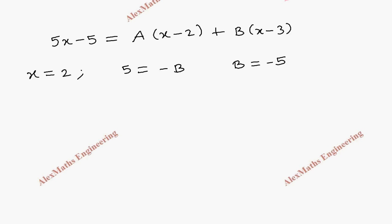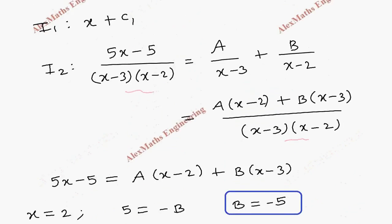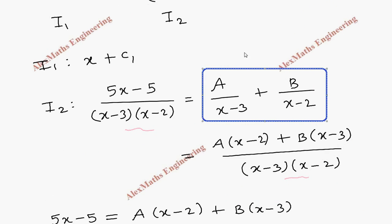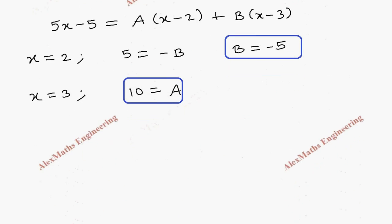In the same way, let's take another value for x: 3. So this will become 15 - 5 which is 10, equal to when I put 3 here it will become A, another term is 0. So we got the value of A as 10 and B as -5. Now we have to substitute this in the term where we apply the partial fraction rule.